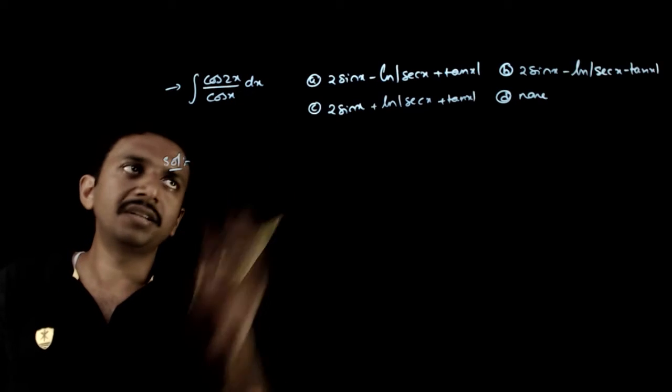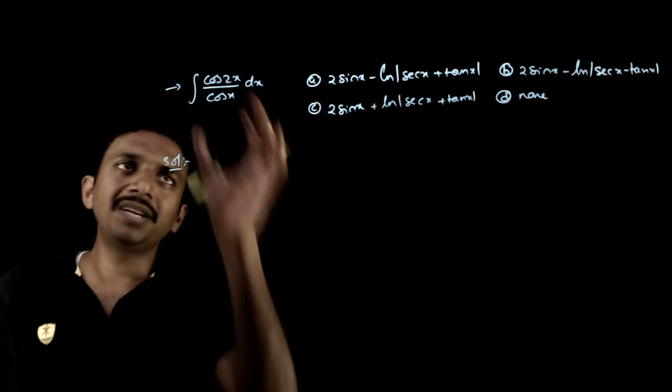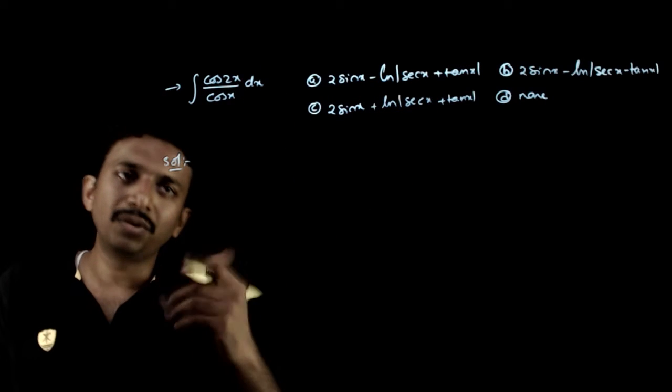This is straightforward integration. Looking at the options, they have two terms, so obviously we need to divide cos 2x into two terms.